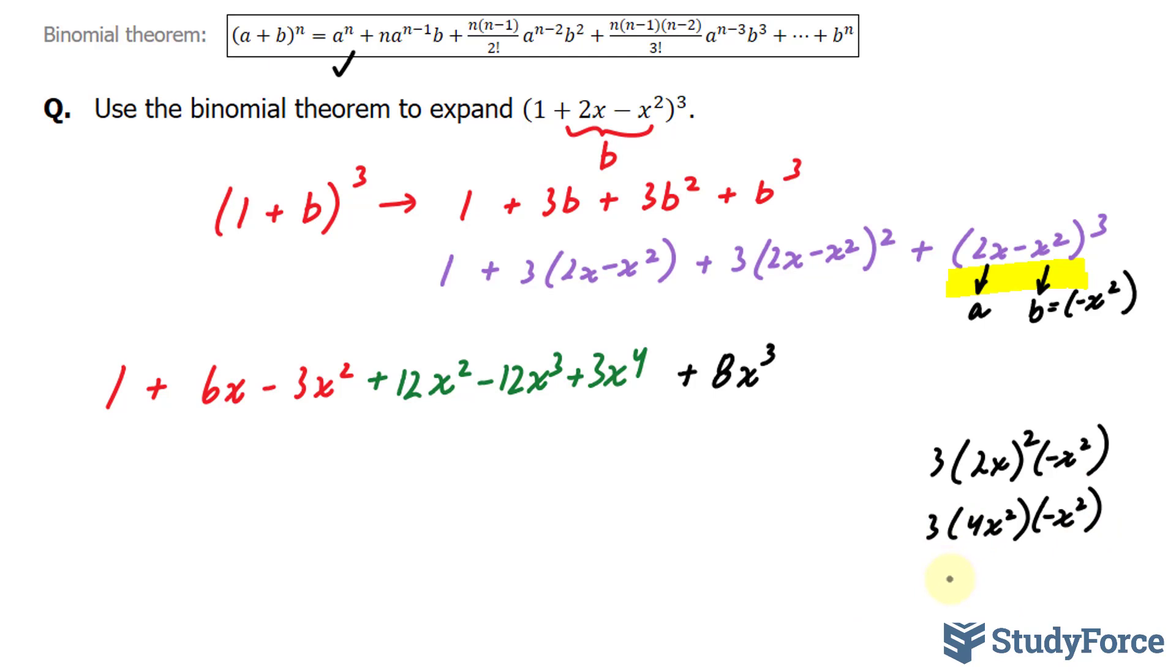3 times 4 is 12 times -1 is -12, x⁴. So that's my next term: -12x⁴. That wasn't so bad.